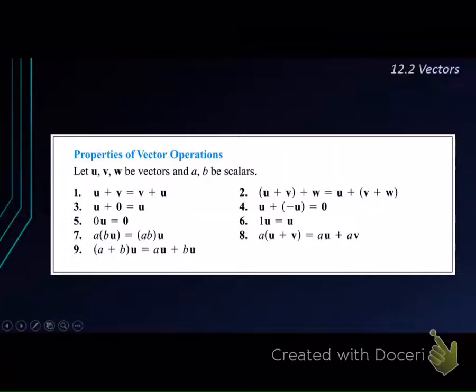There are some properties of vector operations. We need to take a look at all of this. Let's say we have u, v, w be vectors and a, b be scalars. So there are nine of them. Let's take a look one by one.